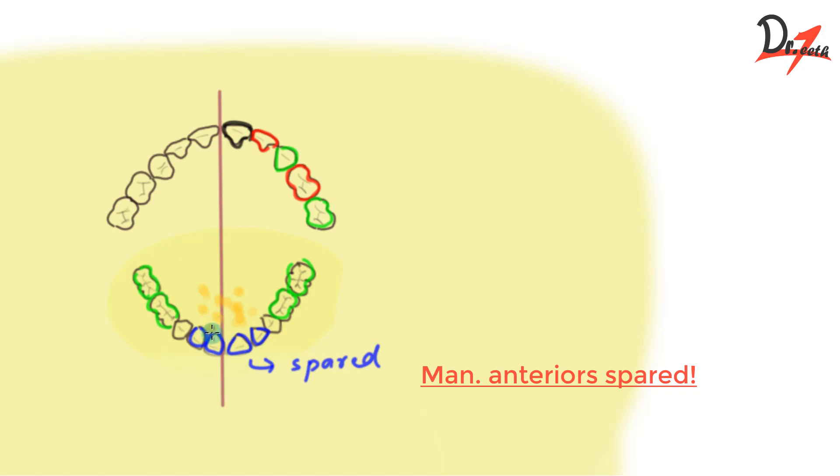Because the sublingual gland orifices are here only. The opening of the sublingual gland is here. The second reason is that these have protection by the tongue. So when our tongue is sitting here, there will be less chances of deposition of food and debris. That is the reason the mandibular anteriors are usually spared.